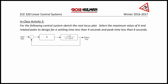First, the open loop gain is k times (s + 1) over (s² + 2s + 2). We see that we have 1 zero and 2 poles, so this can be written as k times (s + 1) over (s + 1 + j)(s + 1 - j).